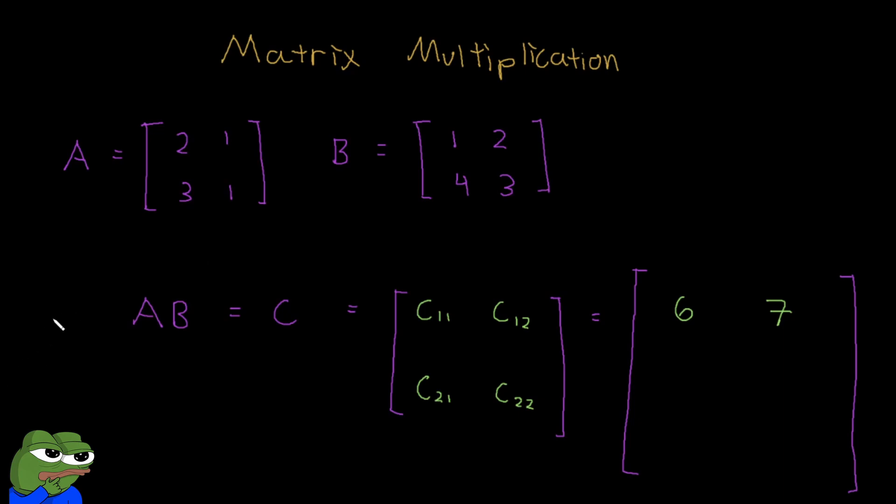And again, we repeat the process where our element C21 gives you a tip that the row is two, so we want to use the second row for A, and the column is one, so we want to use the first column of B. Then we look at the elements again. So that's three times one, plus you move to the right, move down, so that's one times four.